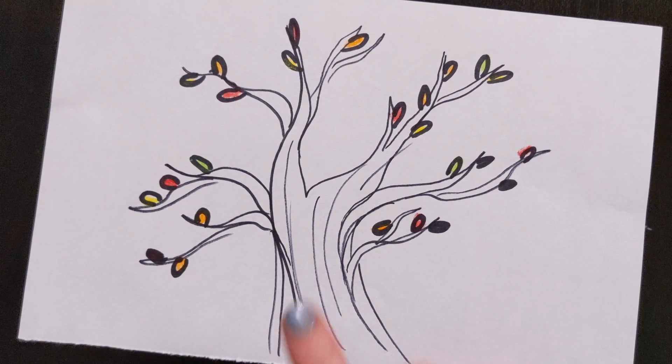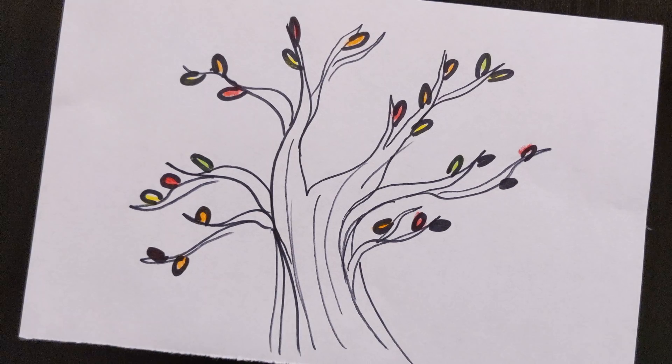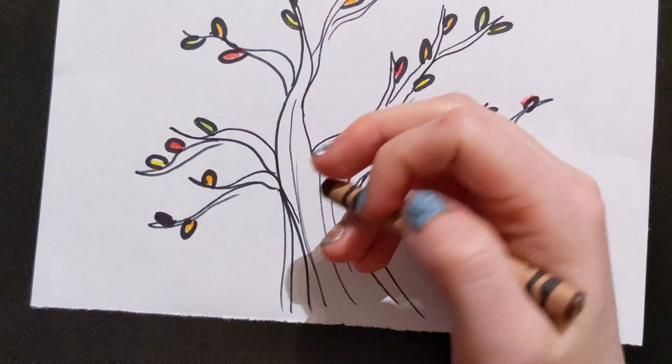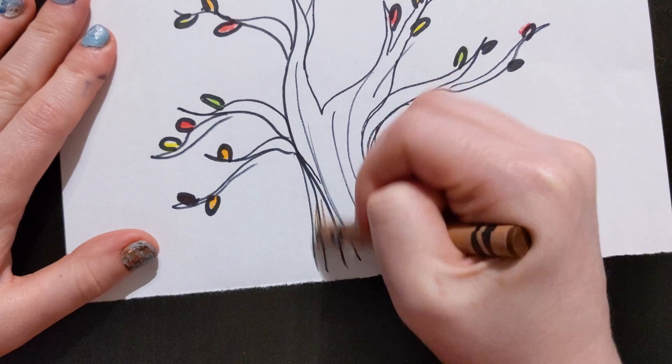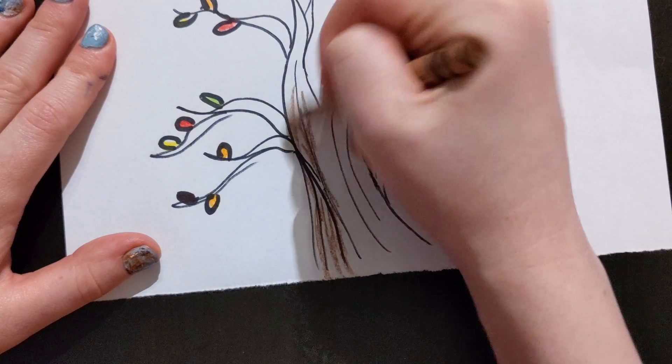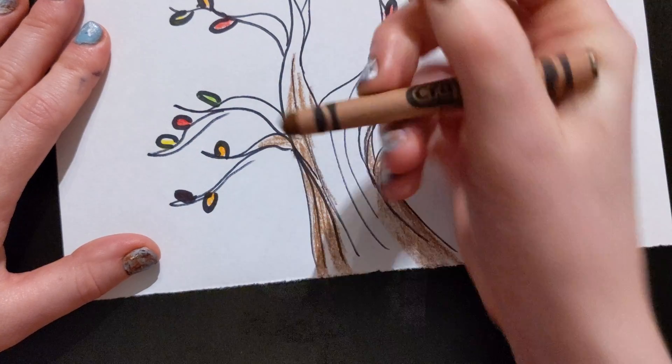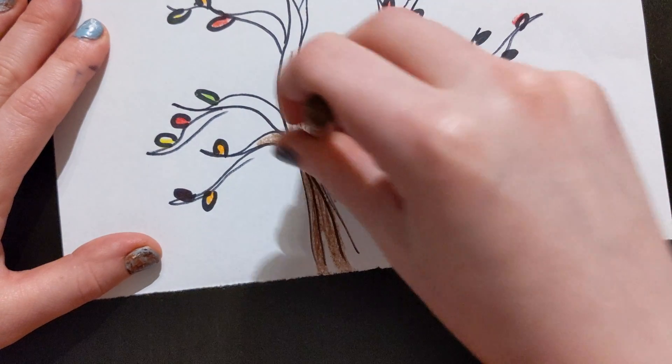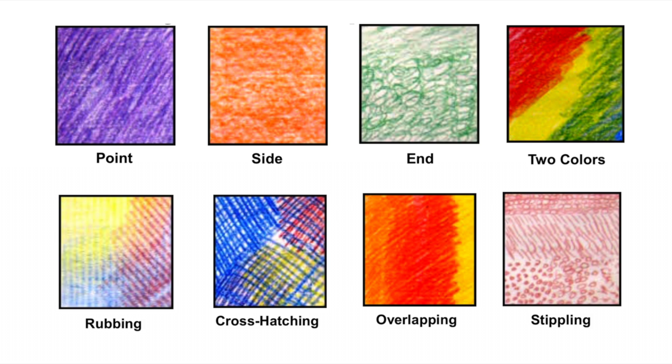I'm also going to color in my tree. So with your tree, maybe you can stipple with lines to add that texture. Or you can always color with the back of your crayon. Just remember some of those crayon techniques that we learned about. Feel free to use any of them.